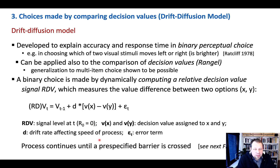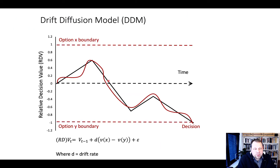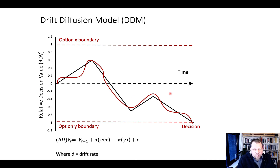This process continues until a pre-specified barrier is crossed. When the option X boundary is crossed, item X is chosen; when the option Y boundary is crossed, the other item is chosen. For example, if we're deciding between a Twix bar and a bag of chips, we accumulate evidence over a couple of seconds for or against one of the two options, eventually rising to one of these thresholds — in this case, boundary Y — so the model predicts that option Y is chosen.